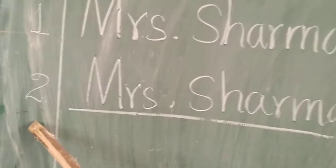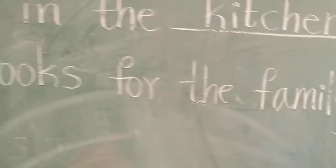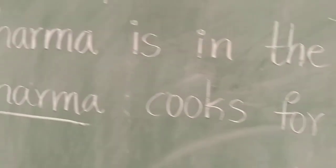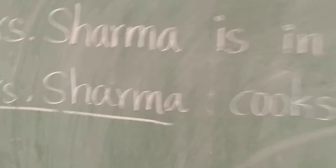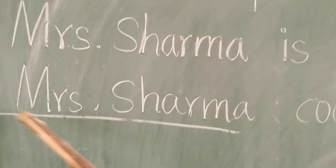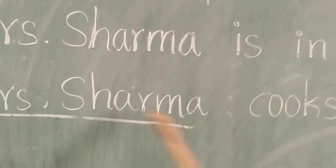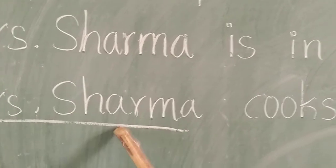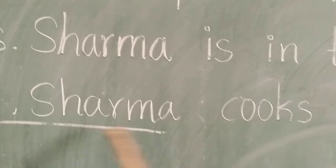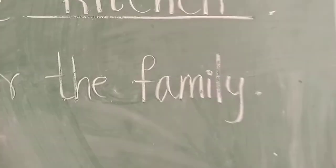Second blank: Dash cooks for the family. Who is it? In the picture you can see — Mrs. Sharma. Spelling: M-R-S, Mrs. S-H-A-R-M-A, Sharma. Mrs. Sharma cooks for the family.